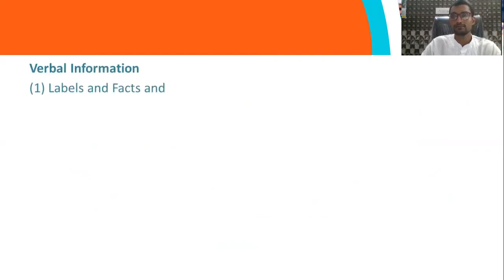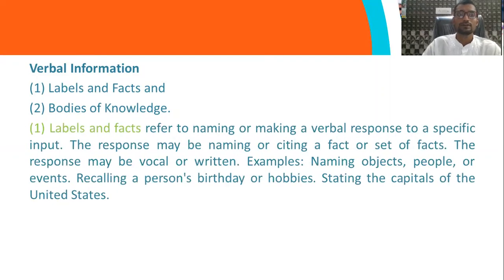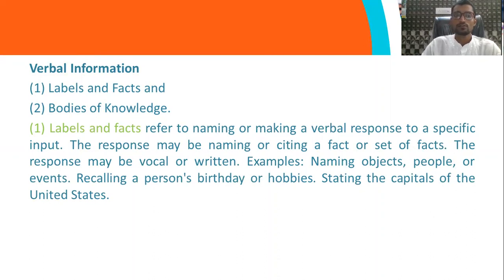The next thing is verbal information. Verbal information also has two elements: labels and facts, and bodies of knowledge. We will distinguish both these elements and understand how they help us understand verbal information. Labels and facts refer to making meaning from verbal responses to a specific input.